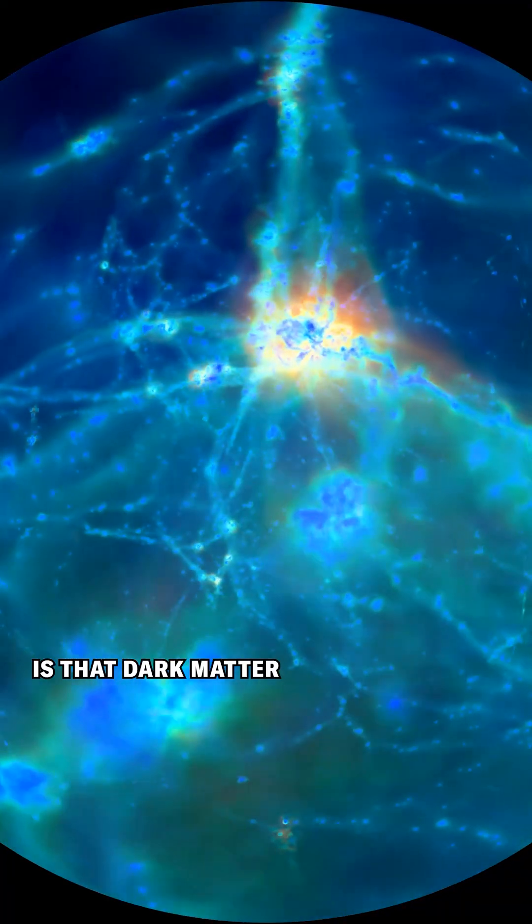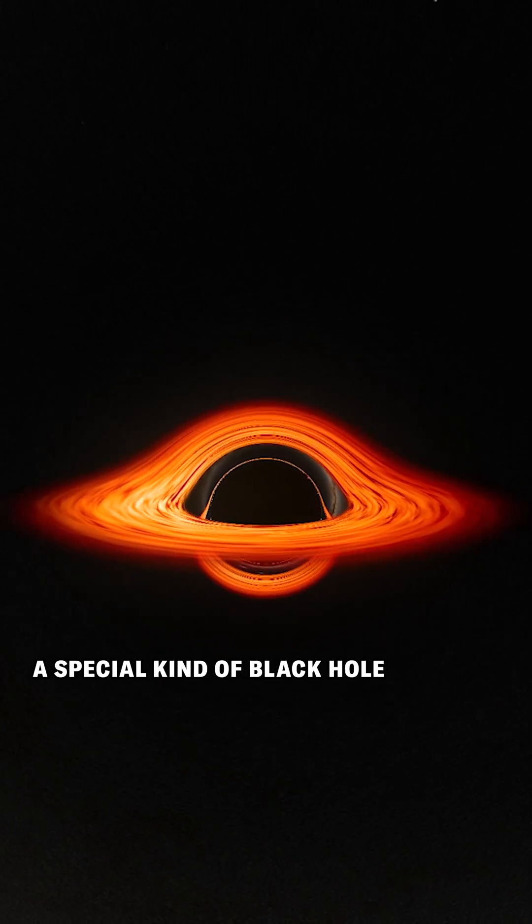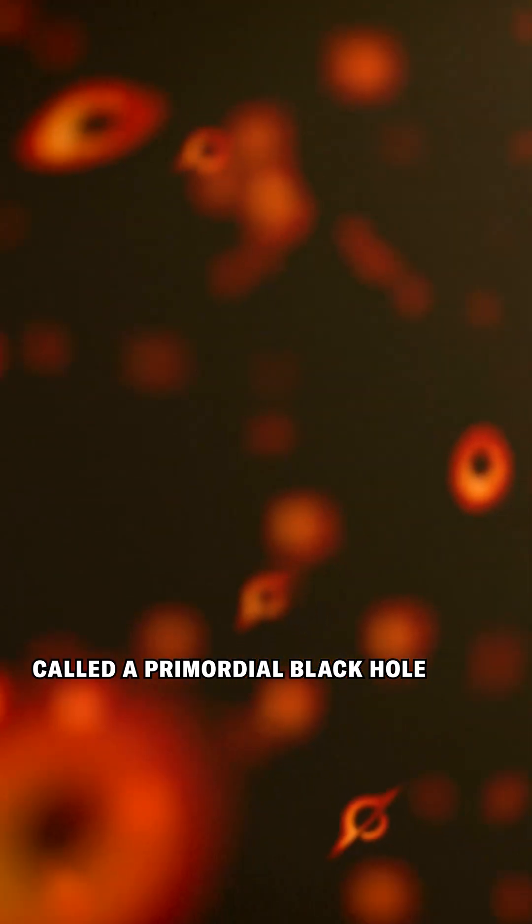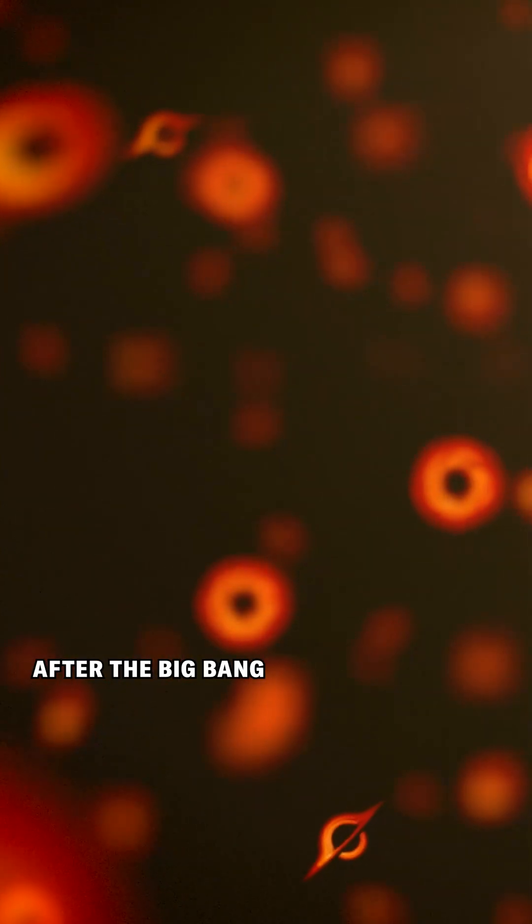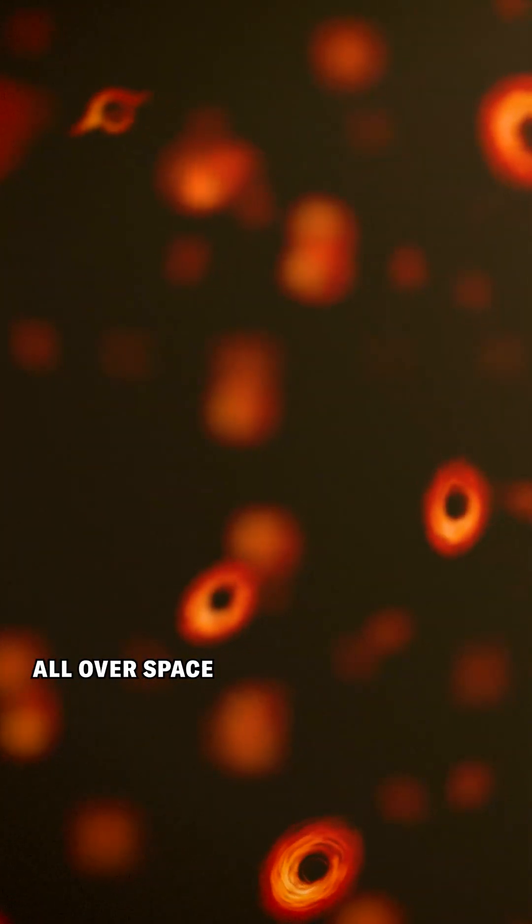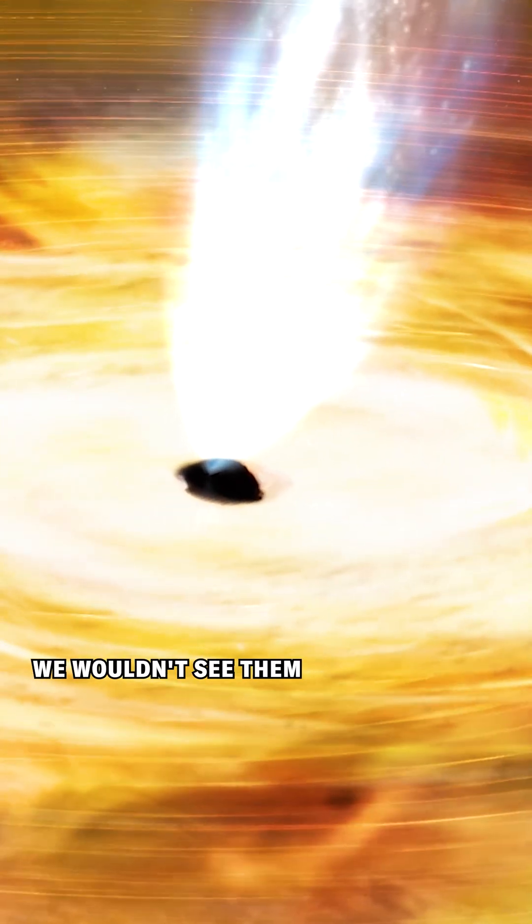One possibility is that dark matter is made of black holes, a special kind of black hole called a primordial black hole, which would have formed shortly after the Big Bang. This thing could be flying all over space, tugging things toward them. But otherwise, we wouldn't see them, we wouldn't feel them.